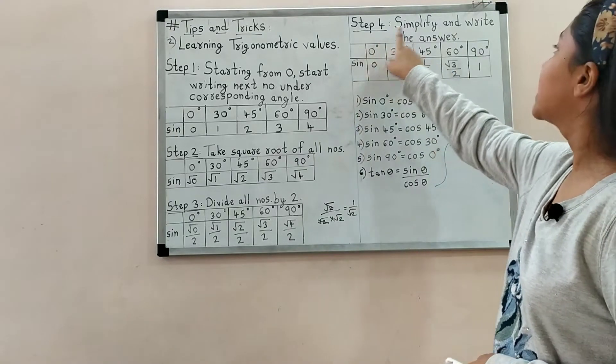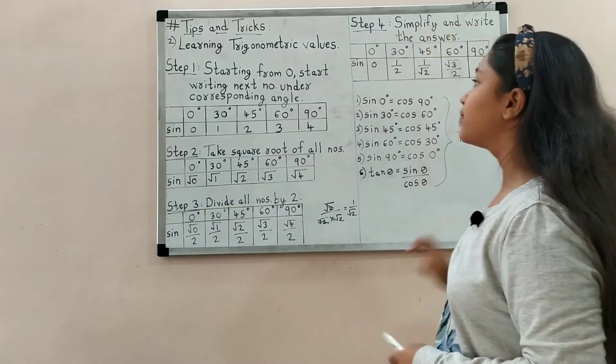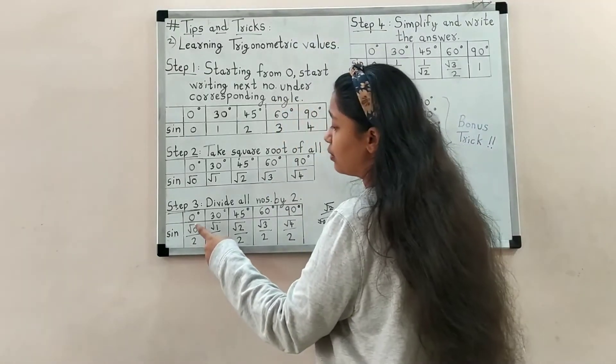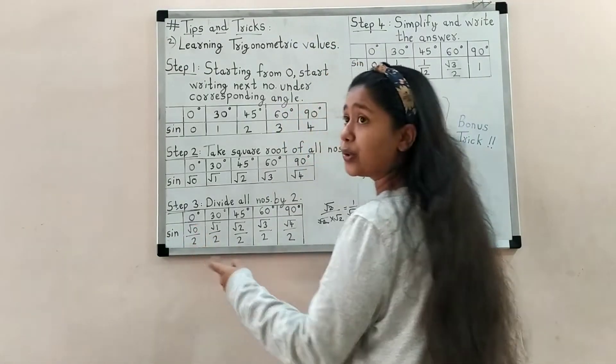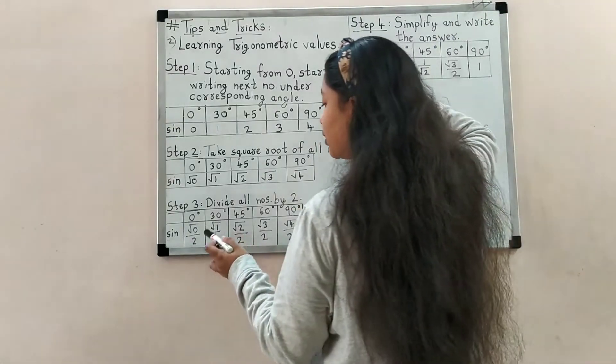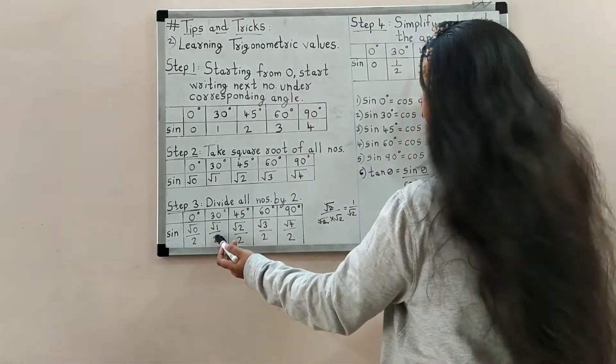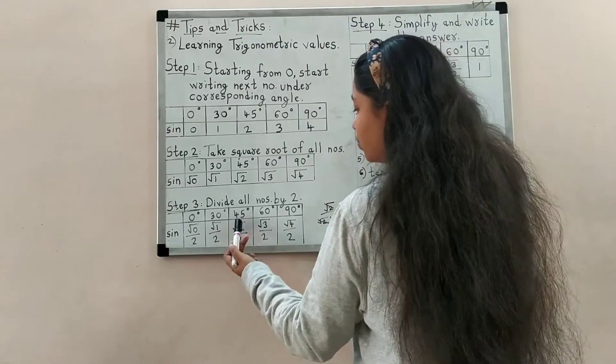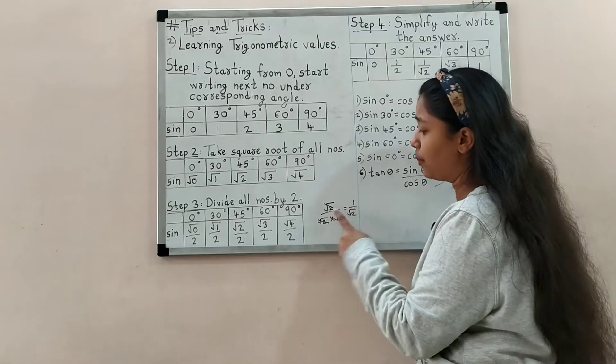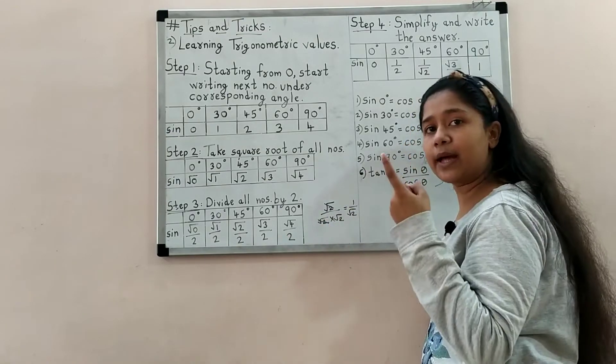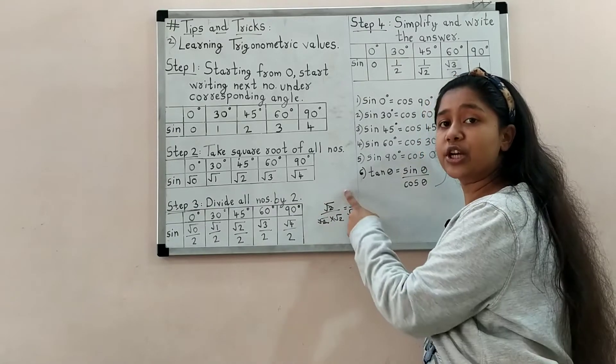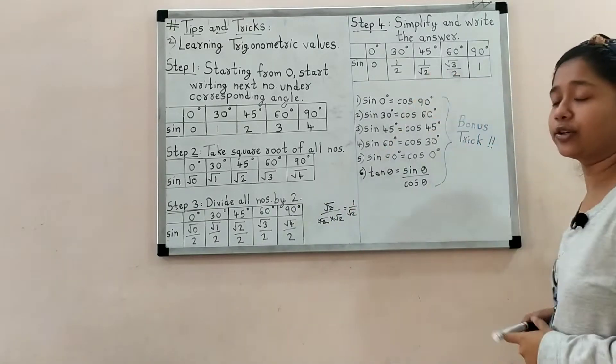Step 4, our final step, says: simplify and write the answer. Square root of 0 upon 2 - here 0 will come. Square root of 1 upon 2 equals 1 upon 2. Square root of 2 upon 2 - root 2 into root 2 cancels, giving 1 upon root 2.